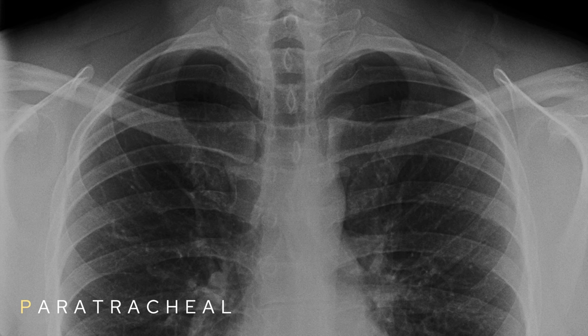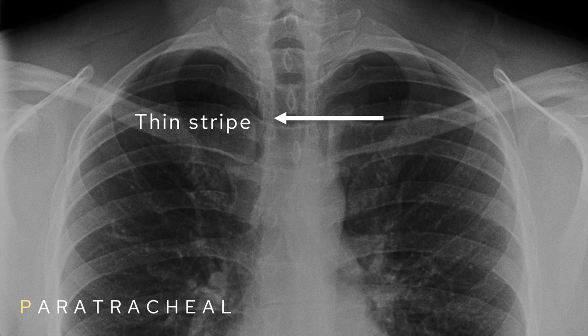Now we can tick off apices and bones and move on to the mediastinum. I use the mnemonic PATTCAKE to review the mediastinum from top to bottom, hitting all the key points. It starts with P for paratracheal — I'm looking for the right paratracheal stripe, which should appear as a thin stripe to the right of the trachea. It might be thickened or widened if there's abnormal lymph node enlargement, which can happen with TB, lymphoma, sarcoidosis, or spread from a lung cancer.